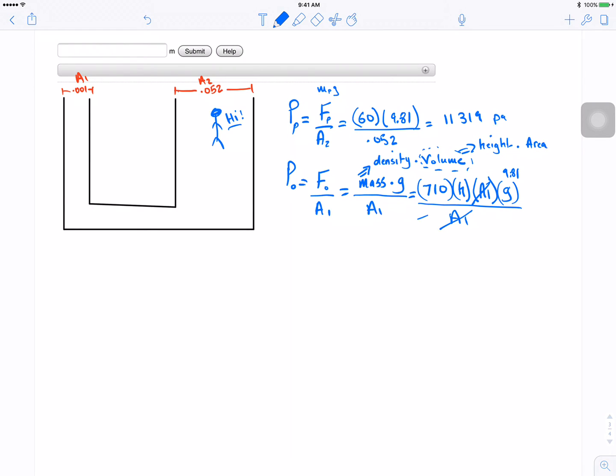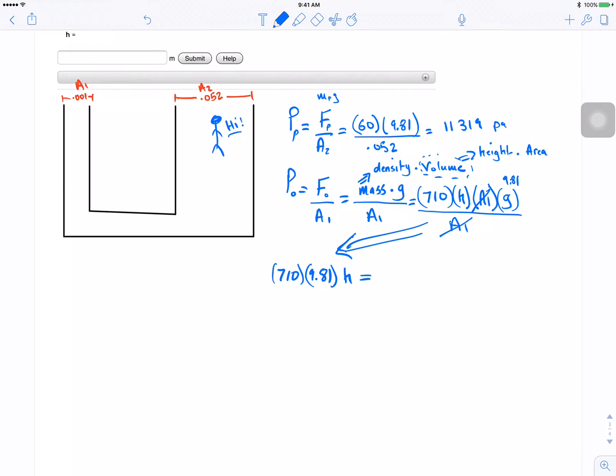So now let's just put in the other equation right there. So 710 times 9.81 times H is going to equal to the pressure I got from here, this guy, which is equal to 11319 Pascal.